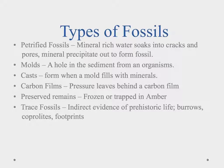Here you can see a list of the six major types of fossils. The first one is petrified fossils, where we have mineral-rich water soaking into the cracks and pores. These minerals will precipitate out and form a fossil. A really good example would be petrified wood, where water flows through it and leaves minerals behind, so it kind of turns to stone — that's what petrified means.